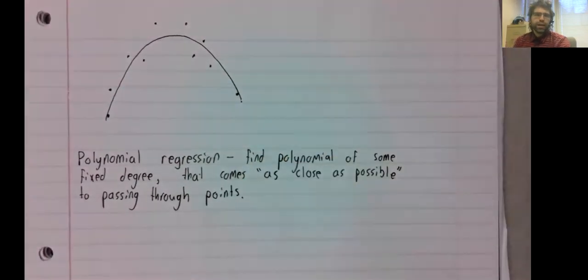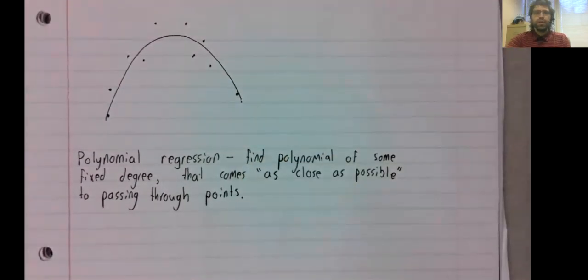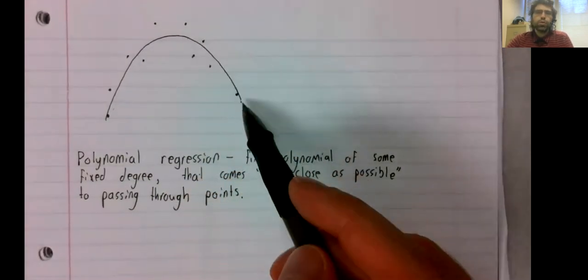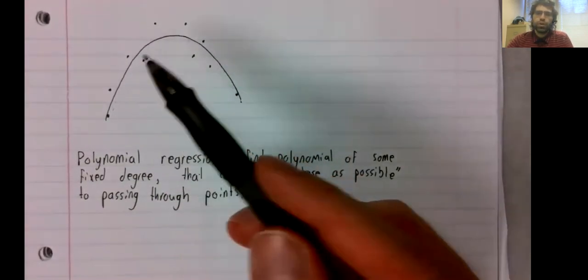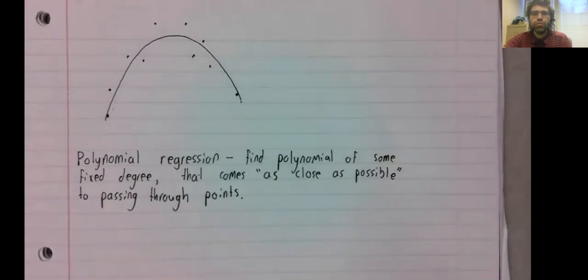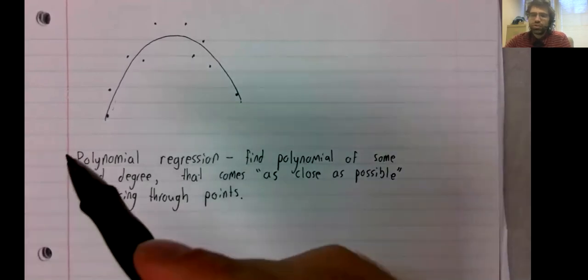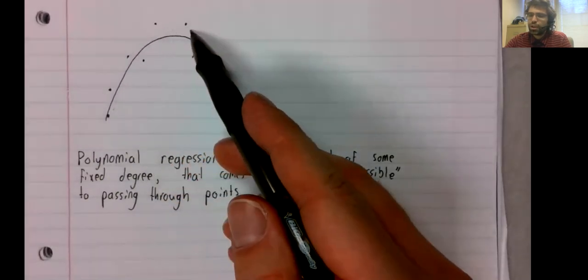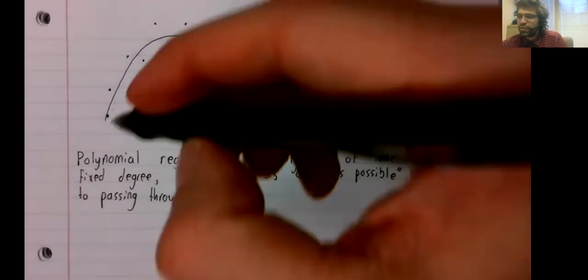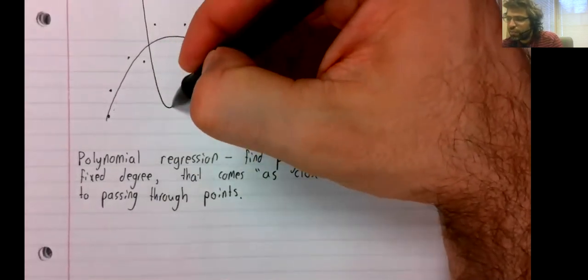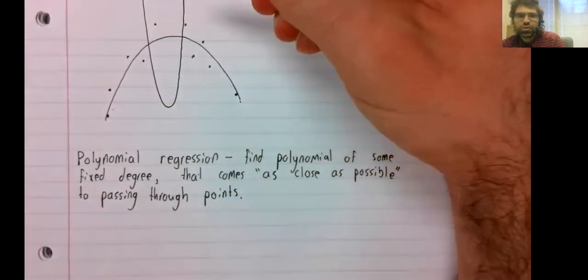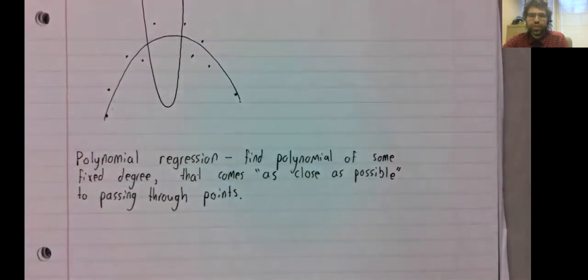It won't pass through them. I mean, like this quadratic, there's no parabola that you can draw that will actually pass through them. But some quadratics come closer than others. I mean, this parabola does a better job of getting near the points than this parabola does. And our goal is to find the best parabola.